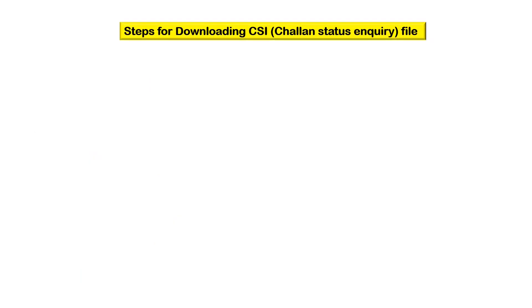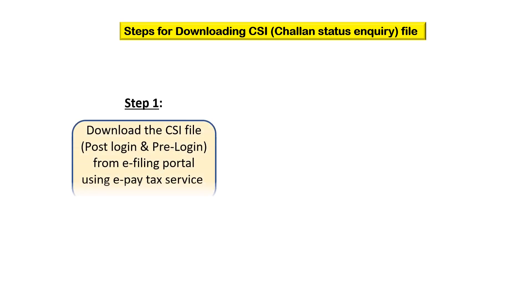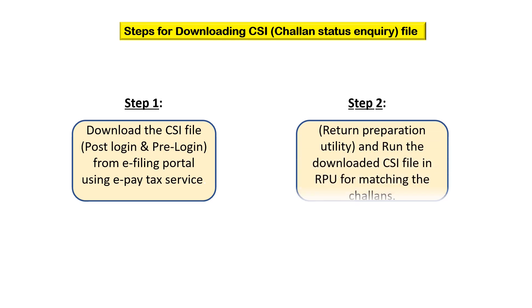Let us now look step by step at how to download the CSI file. The first step is to download the file either from the post-login or pre-login mode from the e-filing portal using ePayTax service. The second step is to download the RPU, that is the return preparation utility, and run the downloaded CSI file in RPU for matching the Chalan.